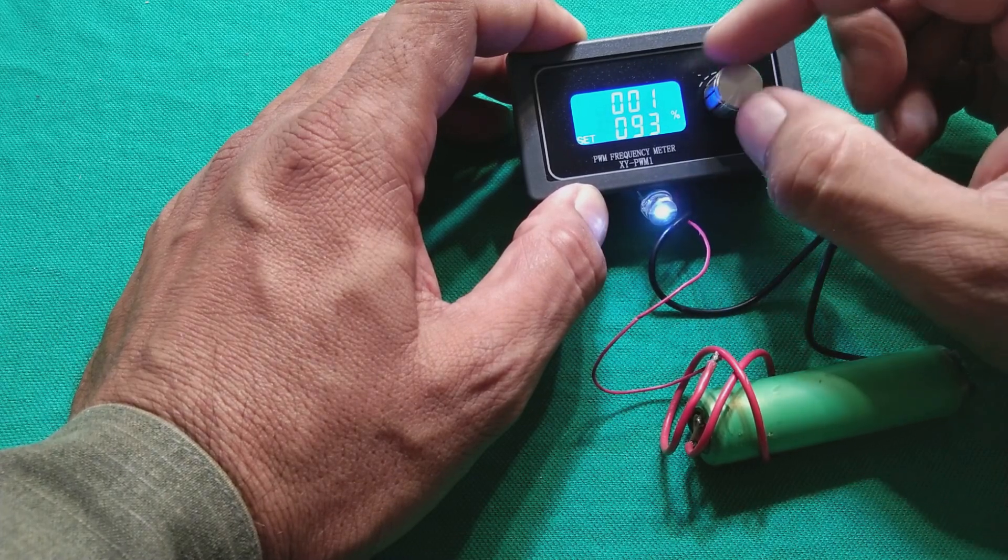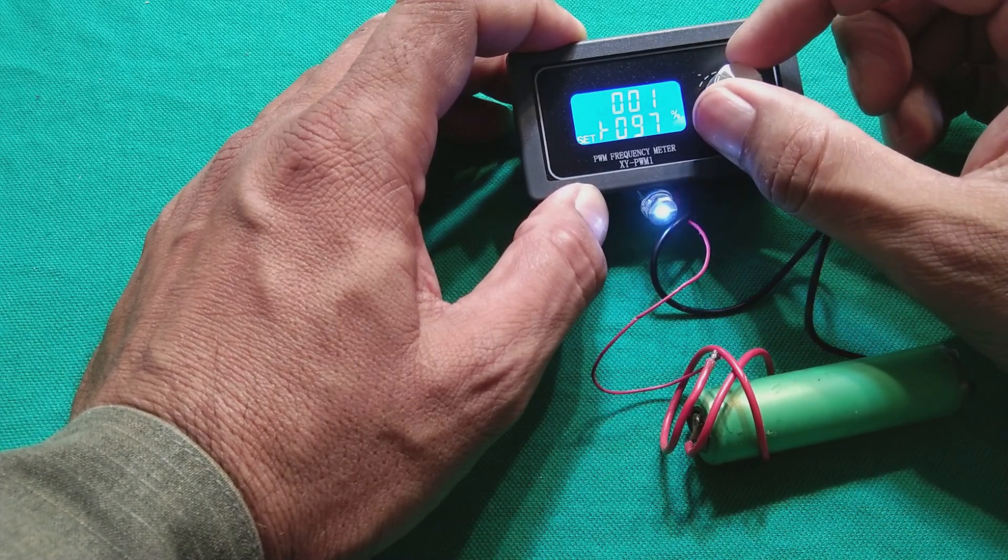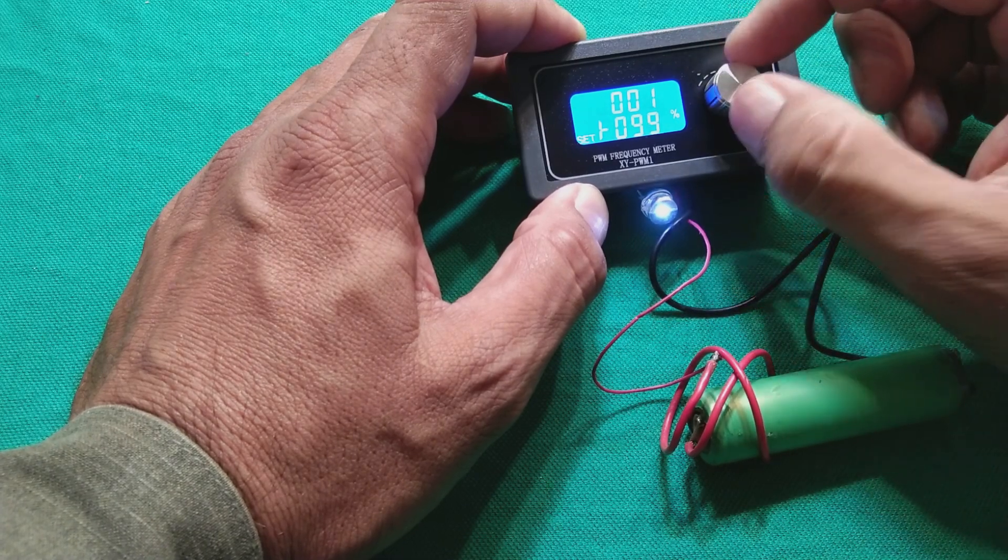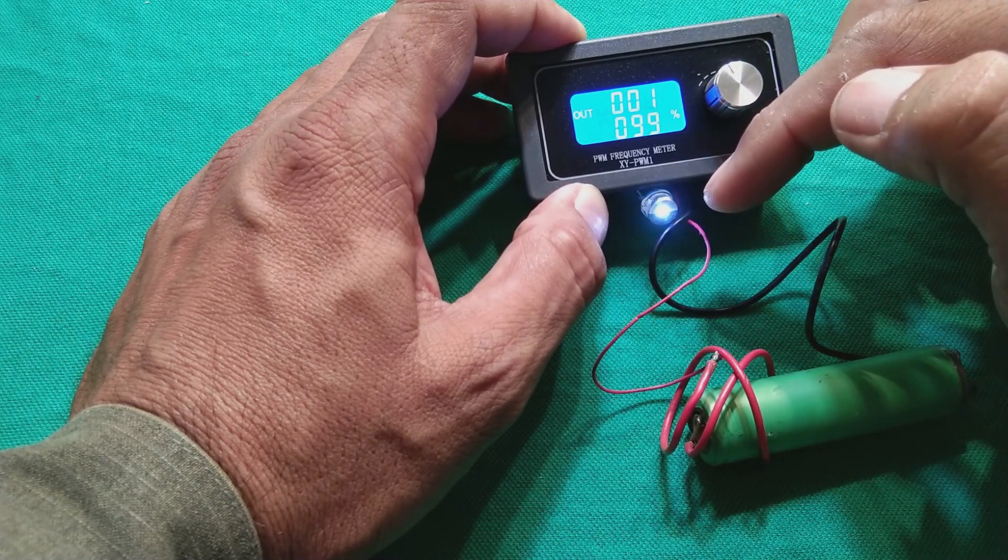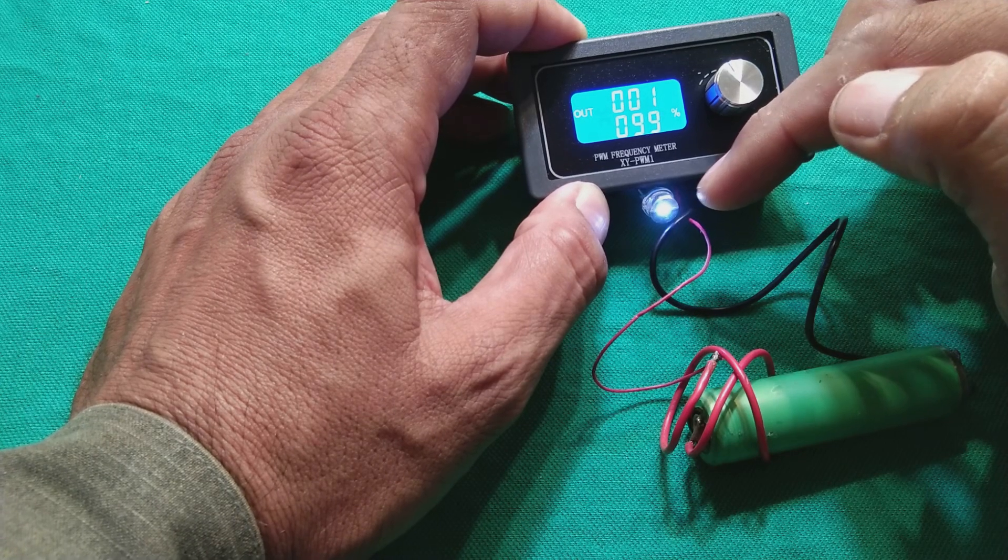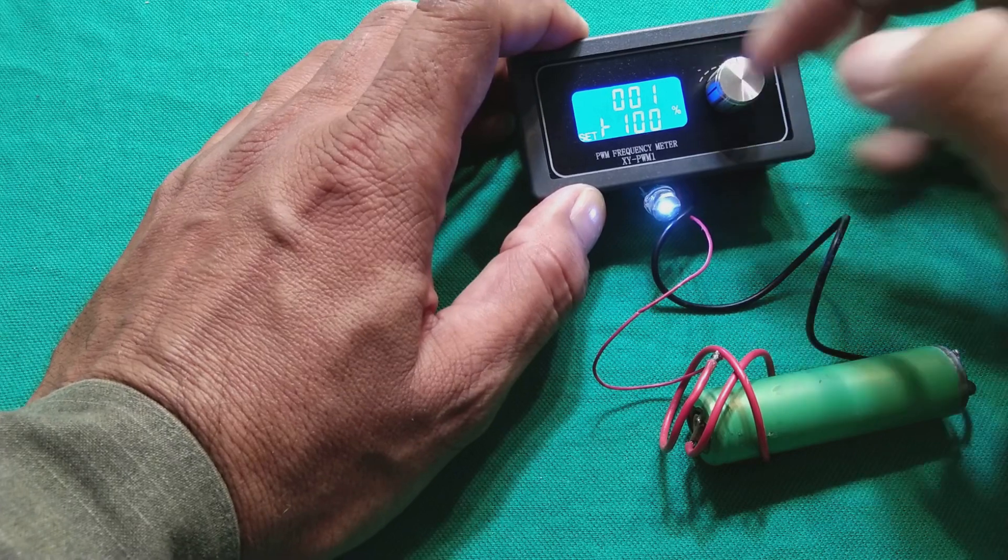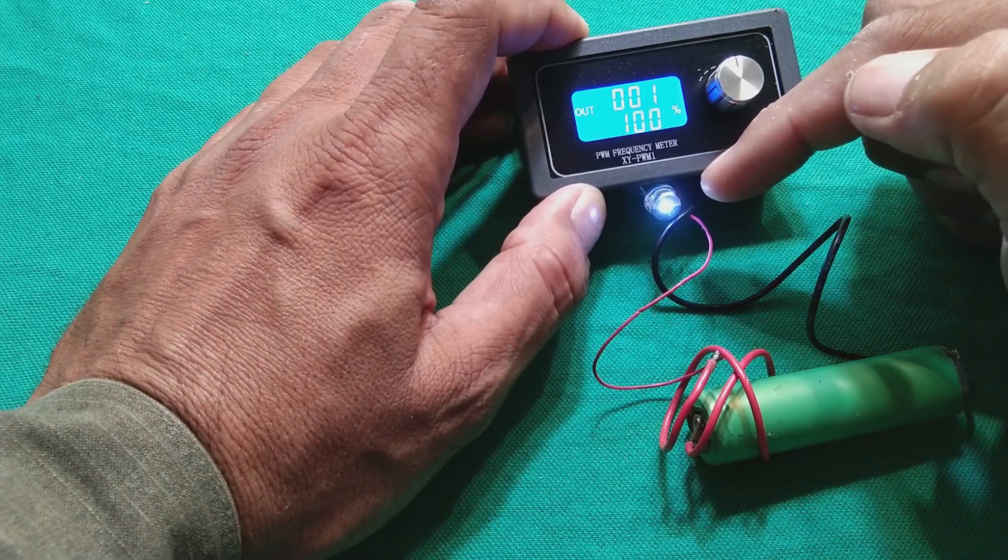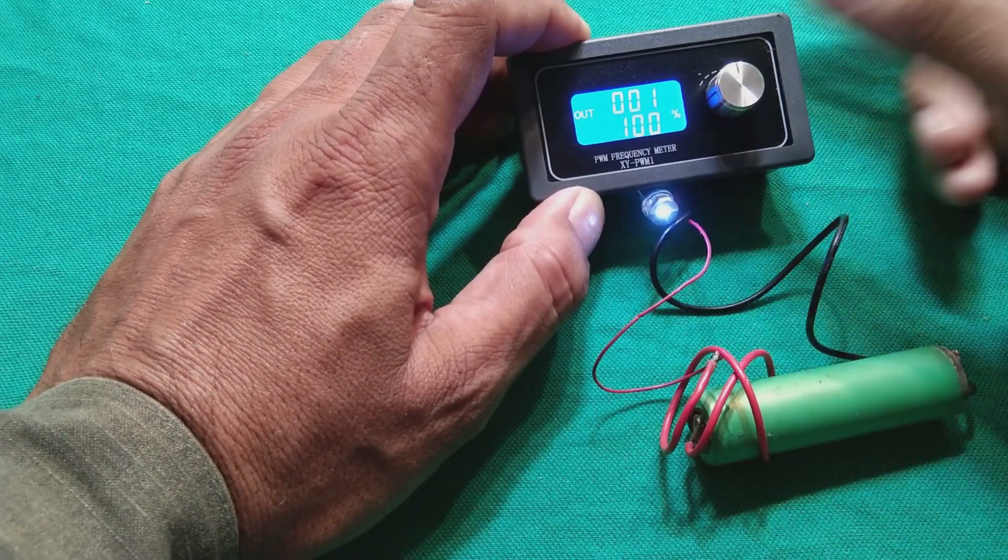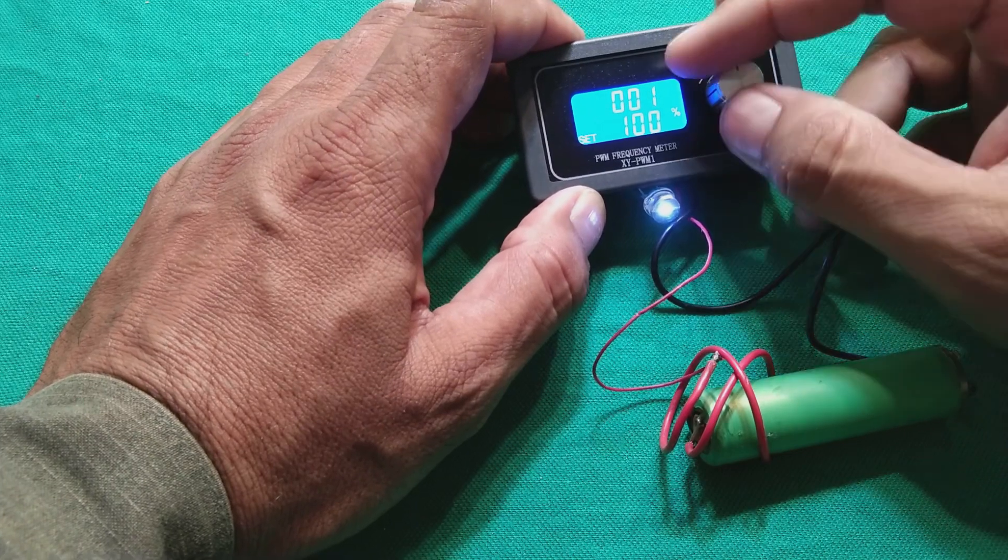If we go to 100% it will be switched on permanently. On 99 it's just flickering shortly. Maybe the camera will not pick it but in reality it is flickering. If we go to 100% it is not flickering. So this is what is the duty cycle.